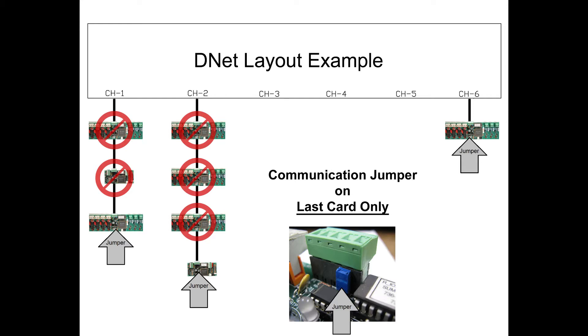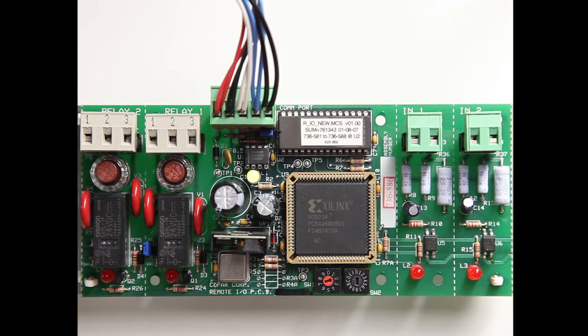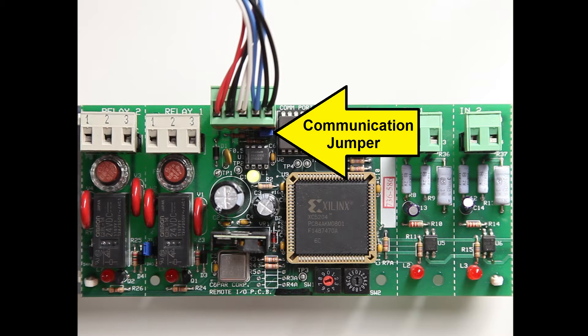If the jumper is not in the correct position, all cards on the string may not work correctly. This is an example of a DNET board. Here is the communication jumper, which we will be talking about in this video.